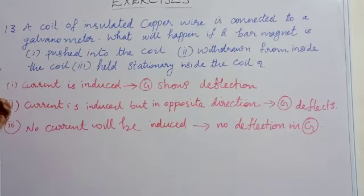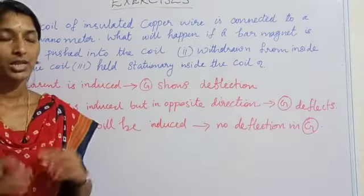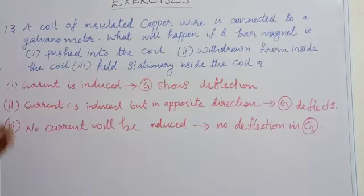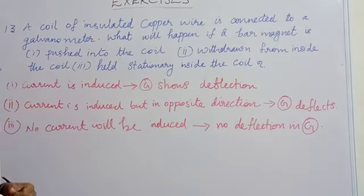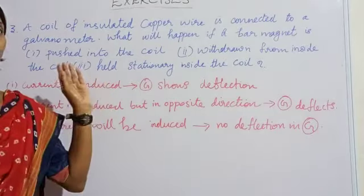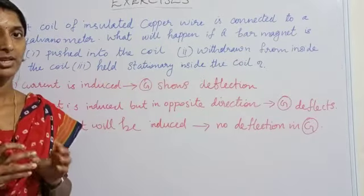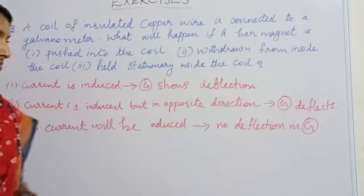First case: when the bar magnet is pushed into the coil. At that time, a current will be induced in the coil. At that time itself, there will be a momentary deflection in the galvanometer.